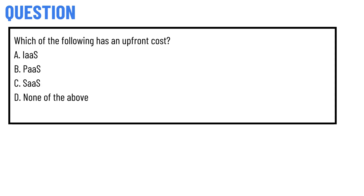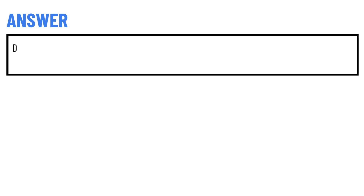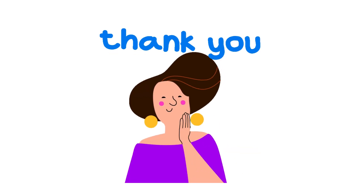Today's question is: which of the following has an upfront cost? Option A: large. Option B: pass. Option C: charge. Option D: none of the above. The correct answer is option D.